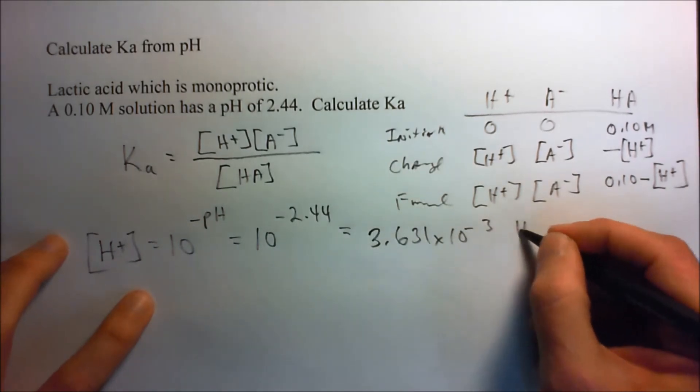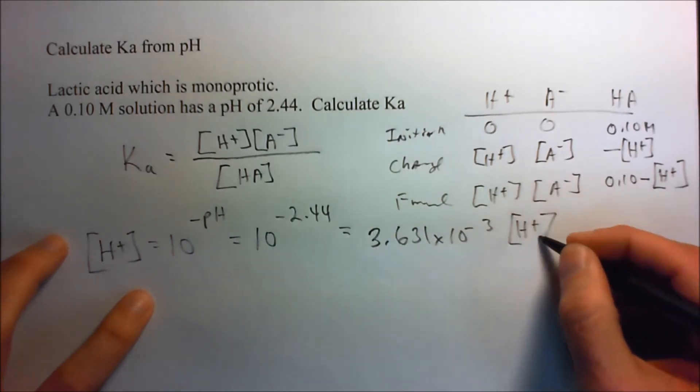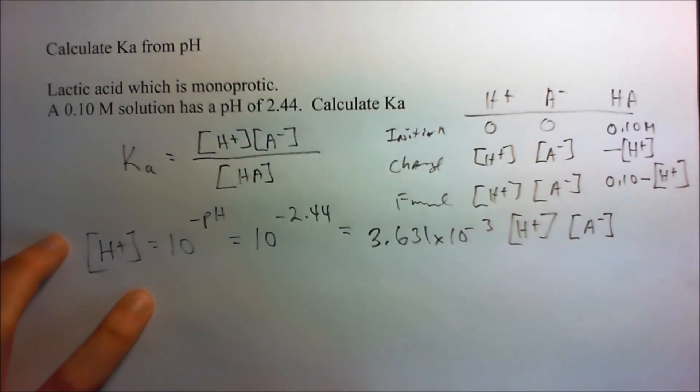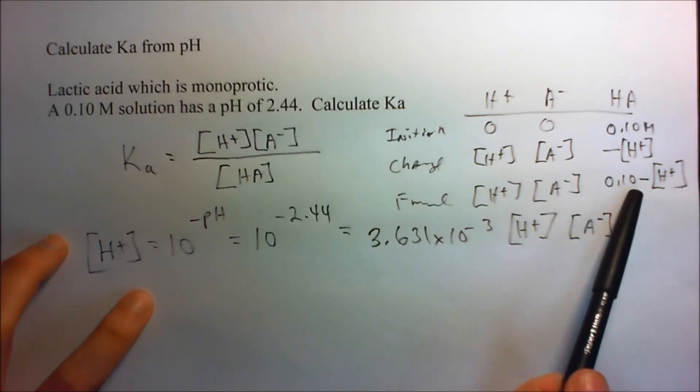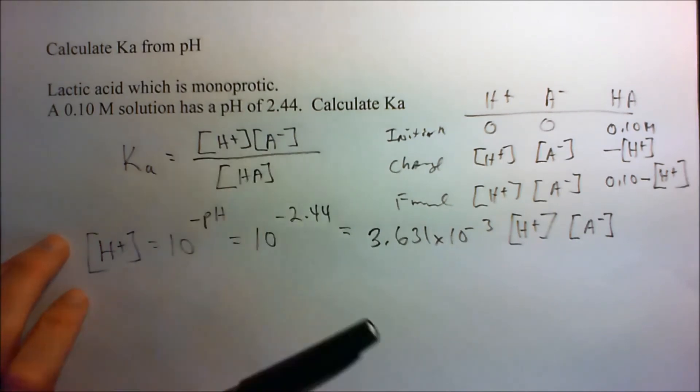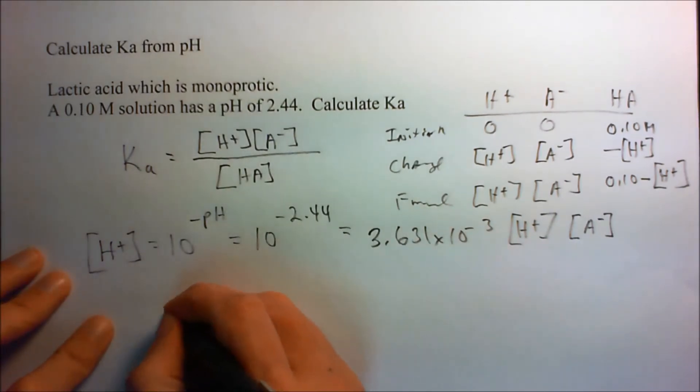And that's the concentration of H plus, and it's also the concentration of our conjugate base. This number, 10 to the minus third, is a lot smaller than 0.1. So, we can ignore this term for the denominator. Now we can just go ahead and plug them all in there.